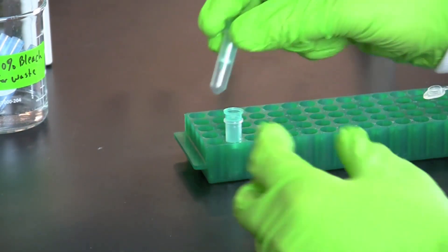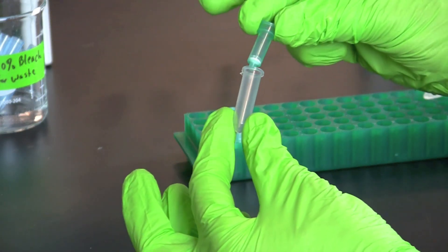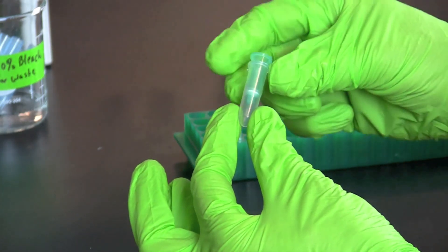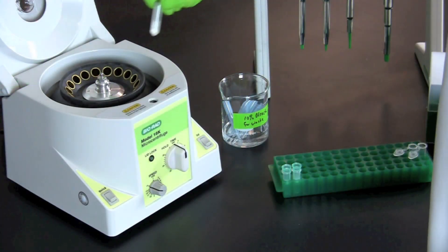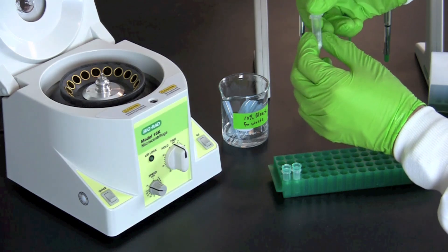Place a green mini column into each of two capless collection tubes. Remove your samples from the microcentrifuge.